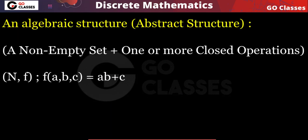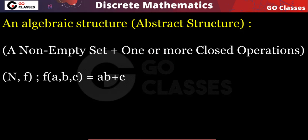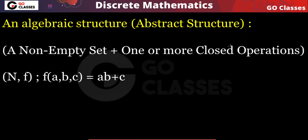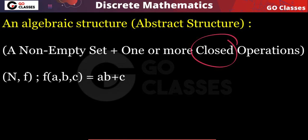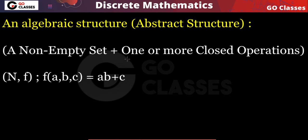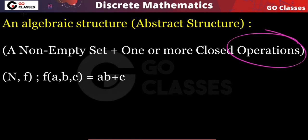Now, algebraic structure has a non-empty set and one or more closed operations. What is a closed operation? This will be clear in the next video. Also remember, in an algebraic structure these operations need not be binary operations — they can be ternary operations as well.